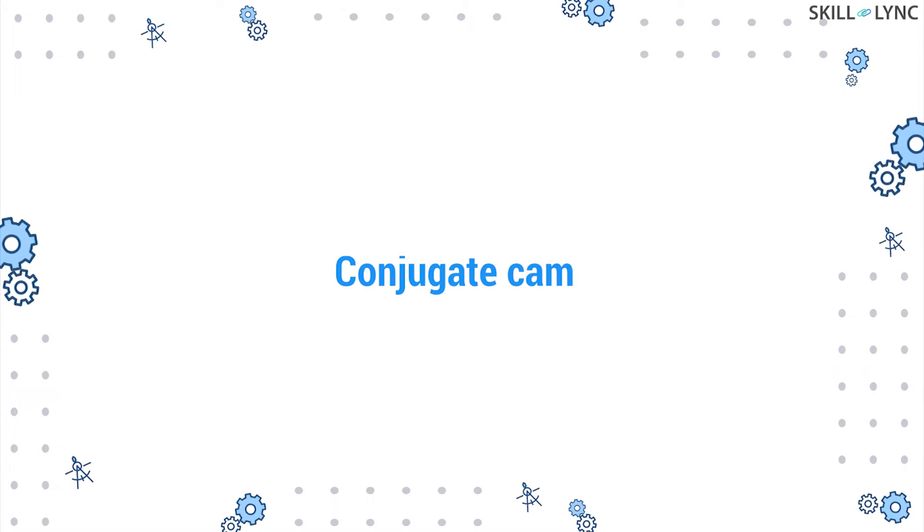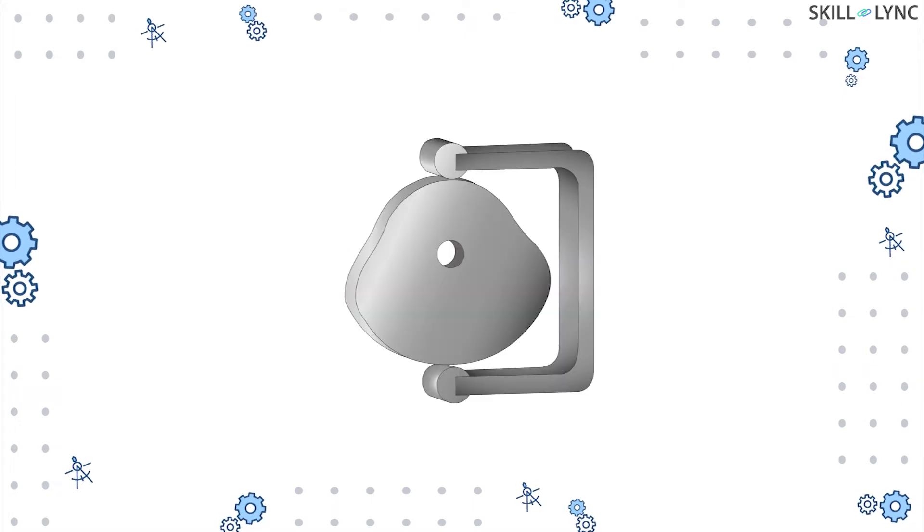Then we have the conjugate cam. This cam is provided with two rollers that are connected to the follower. The rollers constrain the motion of each other and this type of cam is used for noiseless operation.